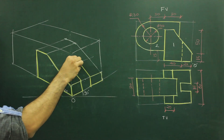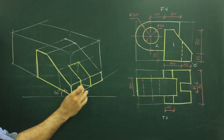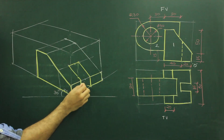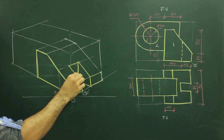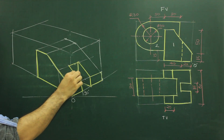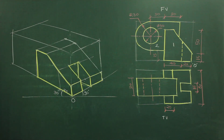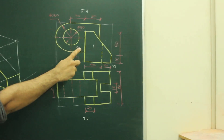Draw a vertical line from here and draw an inclined parallel line at 30 degrees. We are done with Part 1.